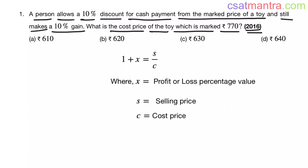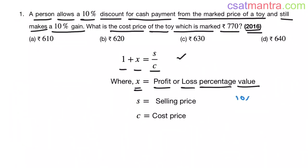When it comes to the profit and loss chapter, there is only one formula. For averages, sequences and series, interest, and profit and loss — all these chapters have one formula per chapter. You should not think anything beyond these formulas. Now let's understand this formula: 1 plus x is equal to S by C, where x is the profit or loss percentage value.